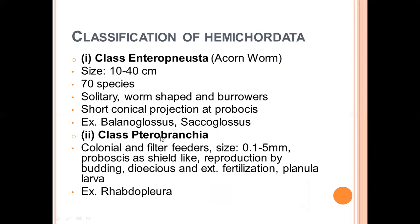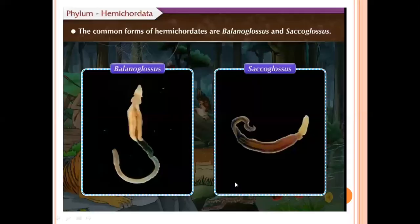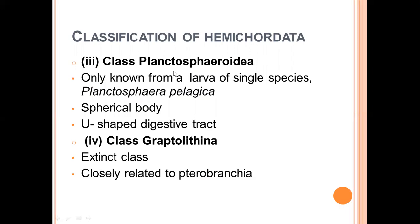We have Balanoglossus and Saccoglossus as examples. They are called acorn worms because the anterior end is pointed — the shape resembles an acorn. If you Google the acorn fruit, its shape is similar. Second class is Pterobranchia. Members of Pterobranchia are colonial and filter feeders. Their size is smaller than acorn worms — 0.1 to 5 mm. The proboscis is shield-like.